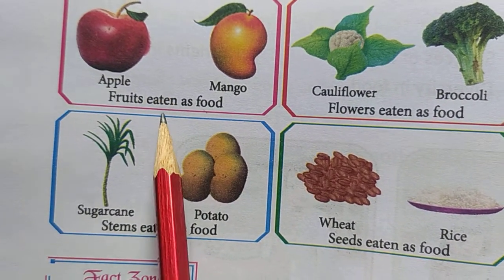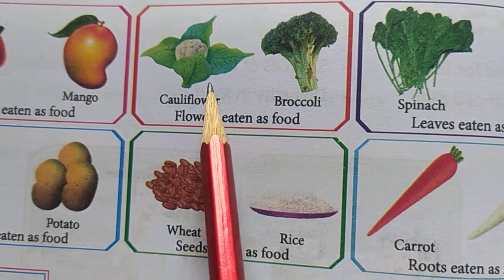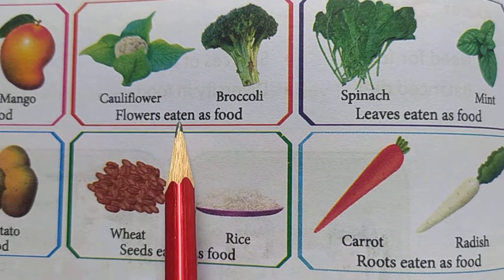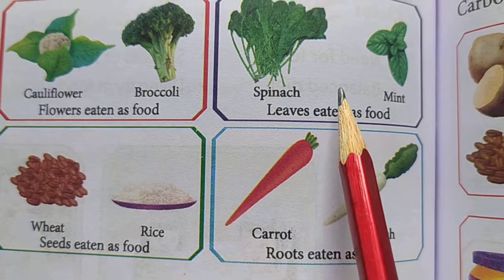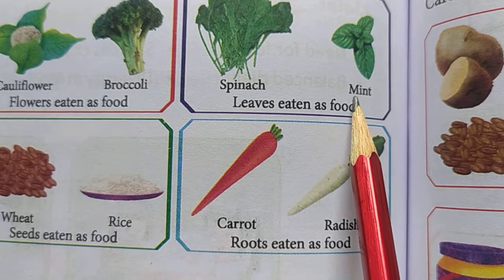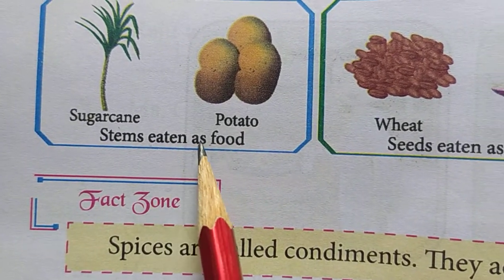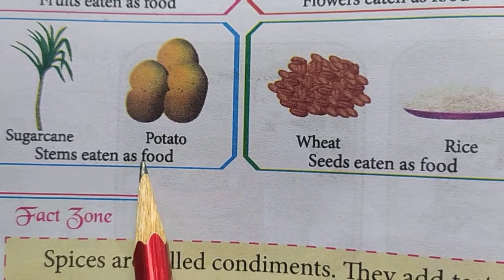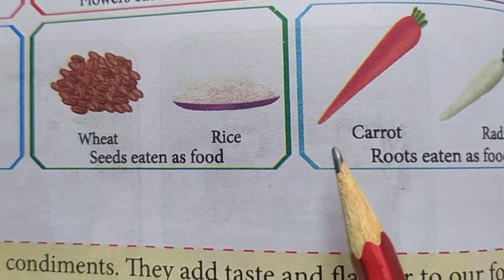In some plants the fruits are eaten as food, and in some plants the flower of the plant is taken as food, like cauliflower and broccoli. In some plants, leaves are eaten as food, like spinach and mint. Sugar cane and potato are stems which we eat as food. Wheat and rice are seeds eaten as food.